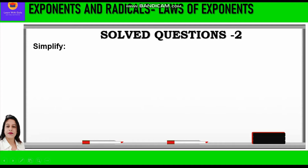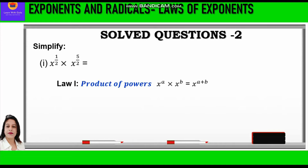Let us start with solved questions based on laws of exponents. The first question is x raised to power half into x raised to power 5 by 2, which equals x raised to power 1 by 2 plus 5 by 2, equal to x raised to power 6 by 2, equal to x cube. Here we have applied law 1, the product of powers: whenever two exponents are multiplied, we add the powers.